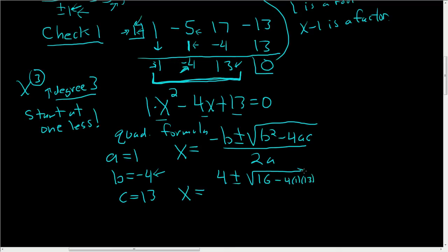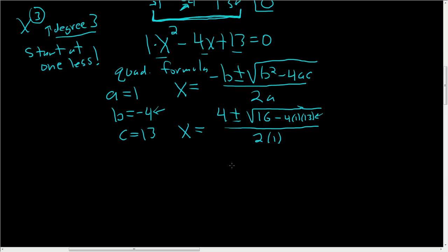I never skip this step here. I always plug them in, because I'm always worried about making a mistake. So that's 2 times 1. To finish, we'll just simplify this. So x is 4 plus or minus the square root of 16. So 4 times 13, old school, we don't have calculators. So 4 times 3 is 12, you carry the 1, 4 times 1 is 4, 52. So minus 52 all over 2.